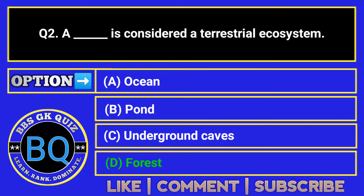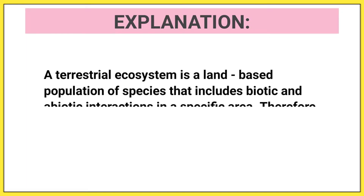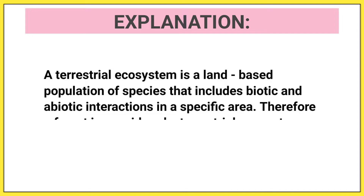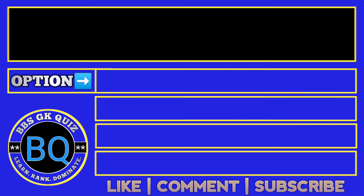The correct answer is option D. A terrestrial ecosystem is a land-based population of species that includes biotic and abiotic interactions in a specific area. Therefore, a forest is considered a terrestrial ecosystem.